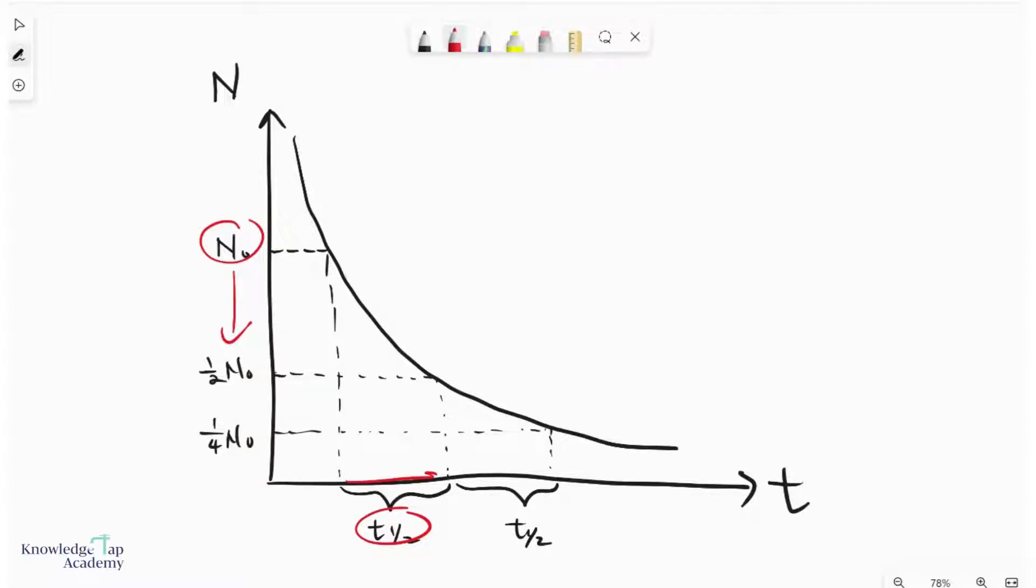Now, because this is a constant half-life process, if I go through another half-life, then of course you expect the number of undecayed nuclei again to half. And so half N₀ becomes a quarter N₀. And so this process will go on and on and on.